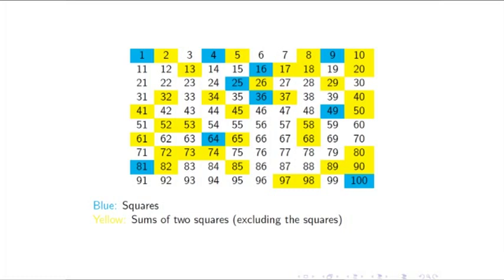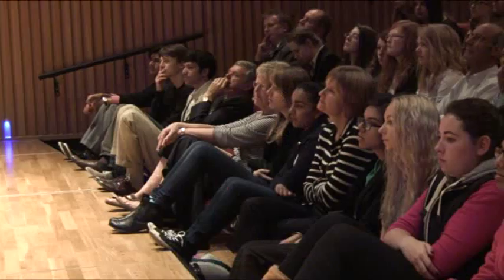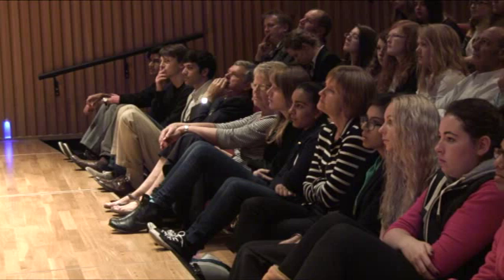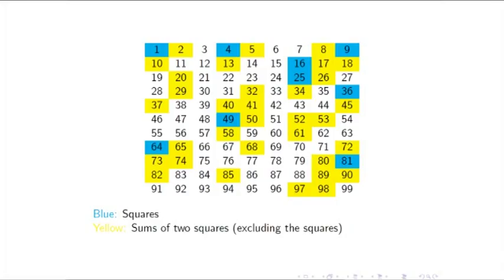Why have I lined them up in a grid with 10 columns? Because we're all used to 10-by-10 squares and we've got 10 fingers, but there's no obvious mathematical reason why 10 should be right. Maybe we should try a different number of columns.